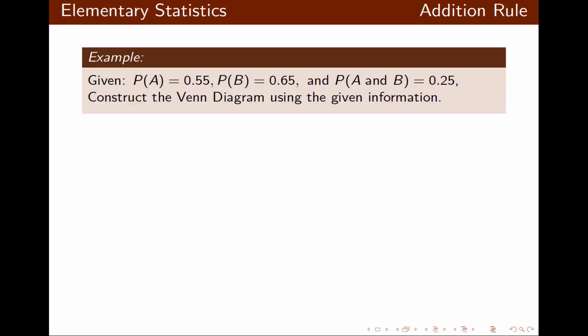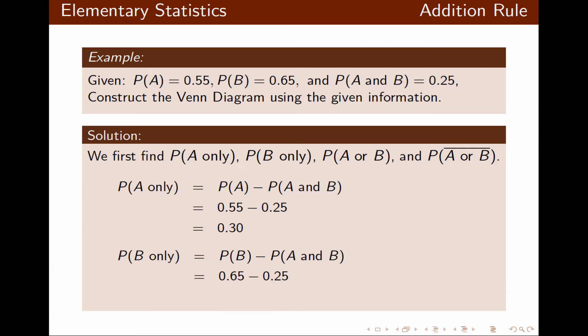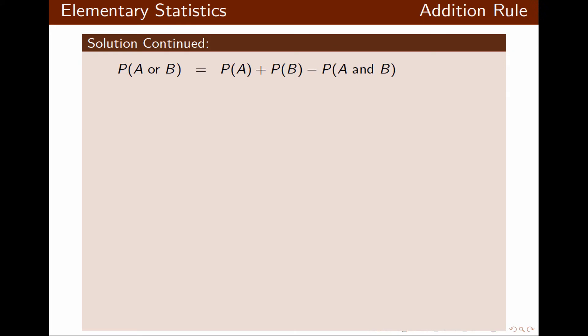Now let's look at this example. Probability of A is given, probability of B is given, and probability of A and B is also given. We want to construct the Venn Diagram given this information. First, we find probability of A only — in this case it is 0.3. We find probability of B only — in this case it is 0.4. Then we find probability of A or B by using the addition rule — in this case it is 0.95.